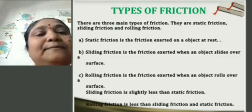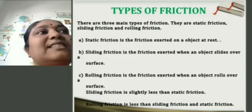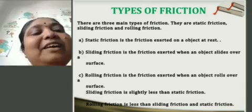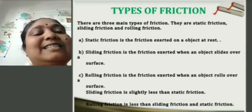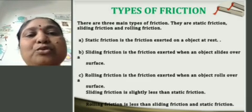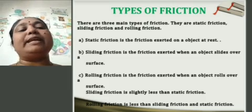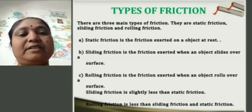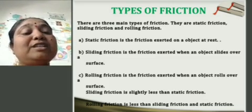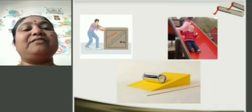Sliding friction is the friction exerted when the object slides over the surface. Think of a slide — when you come down from the top, that is sliding friction. Rolling friction is the friction exerted when an object rolls over the surface, like when we roll a ball. Sliding friction is slightly less than static friction. Rolling friction is less than both sliding friction and static friction.